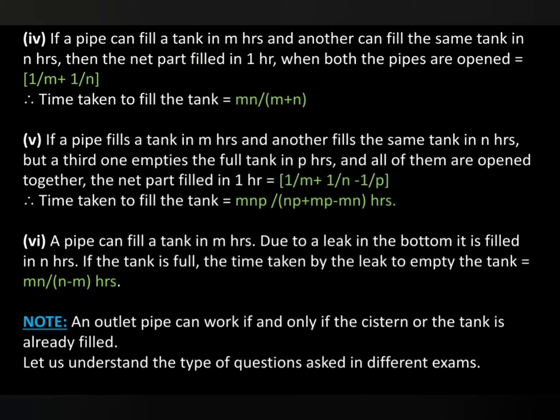Next fifth one, if a pipe fills a tank in m hours and another fills the same tank in n hours, but a third one empties the full tank in p hours and all of them are opened together, the net part filled in 1 hour equals to 1 by m plus 1 by n minus 1 by p. Time taken to fill the tank equals to mnp by np plus mp minus mn hours.